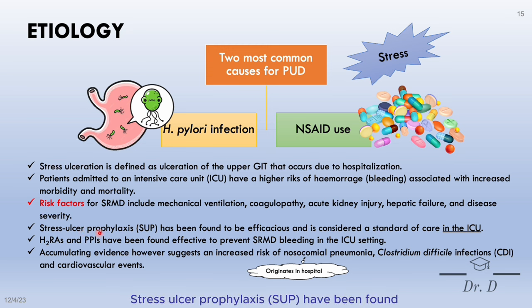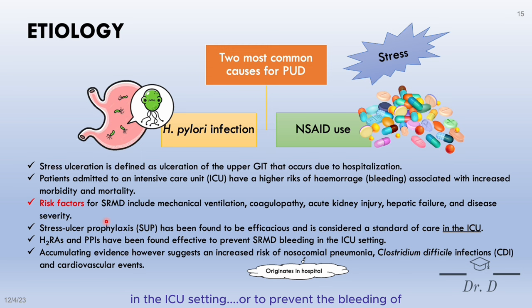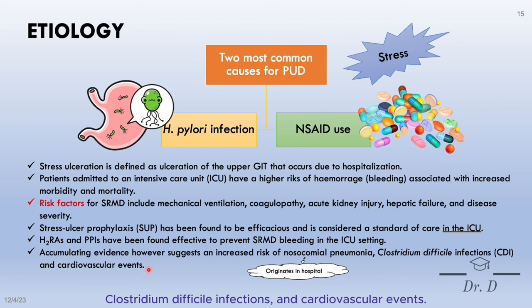Stress ulcer prophylaxis, or SUP, has been found to be efficacious and is considered a standard of care in the ICU. H2 receptor antagonists and PPIs have been found effective to prevent these ulcers or prevent their bleeding in the ICU setting. However, evidence is accumulating to suggest an increased risk of nosocomial pneumonia, Clostridioides difficile infections, and cardiovascular events.